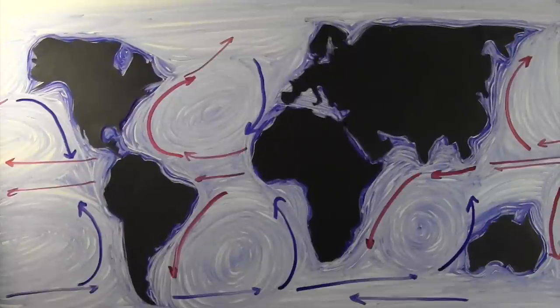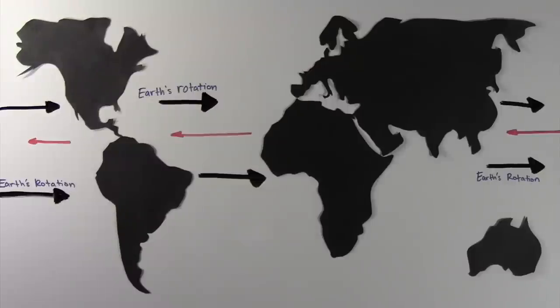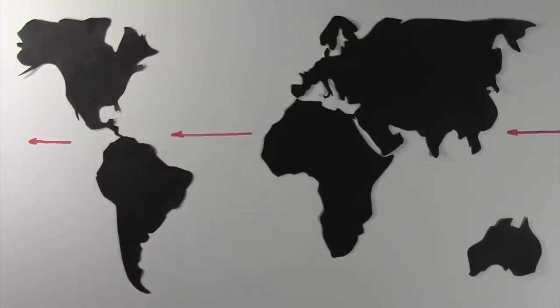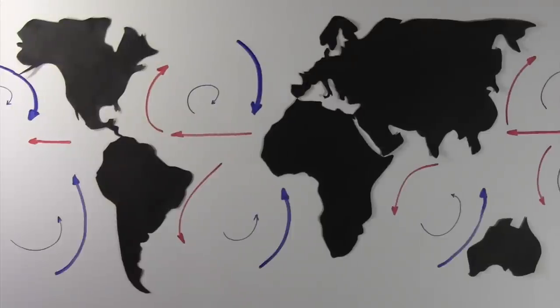Gyres are large swirling currents that move the surface of the ocean. Due to the rotation of the earth, wind stress pushes these currents such that the gyres rotate clockwise in the northern hemisphere and counterclockwise in the southern hemisphere.